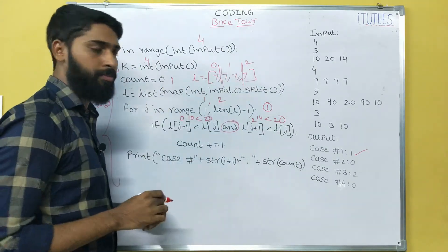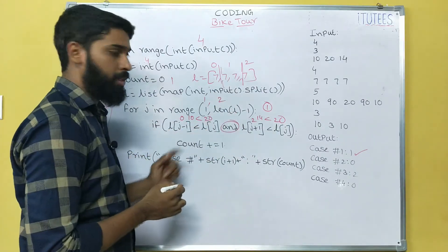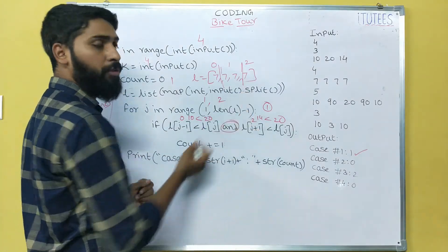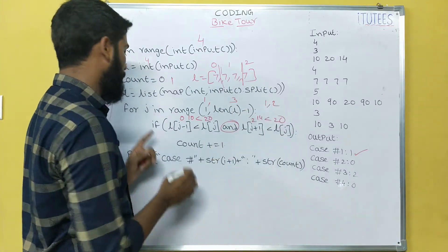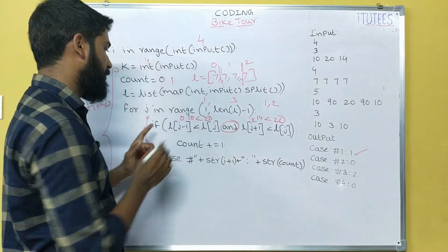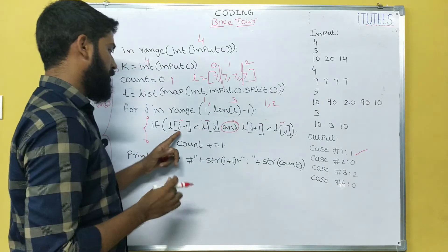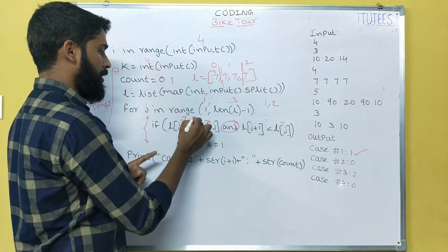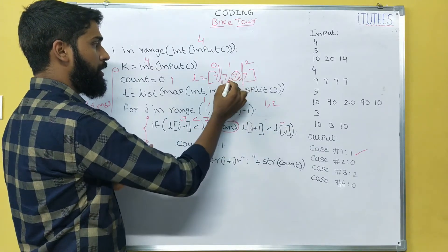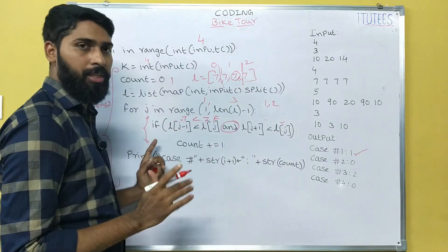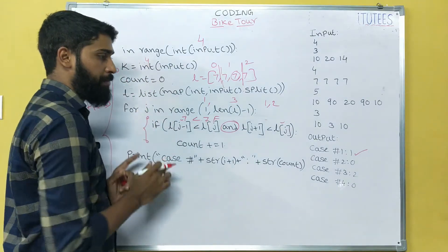In the next iteration, K becomes 4 and L becomes [7, 7, 7, 7]. We ignore the first and last. J runs in range(1, 3), giving indices 1 and 2. For J=1: L[0] is 7, and 7 < 7 is false. For J=2: 7 < 7 is false again. The count does not increment, so it remains 0. We print count as 0.